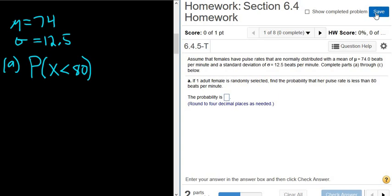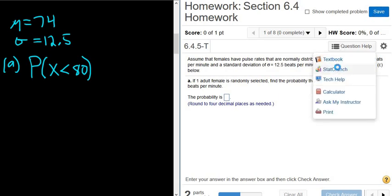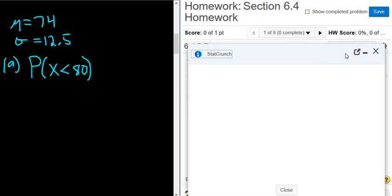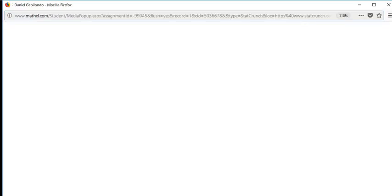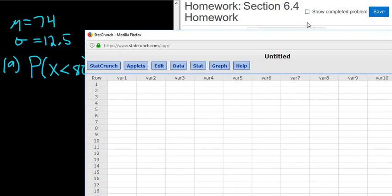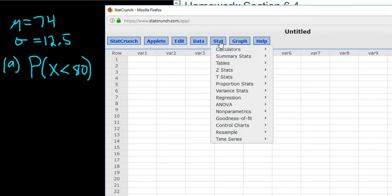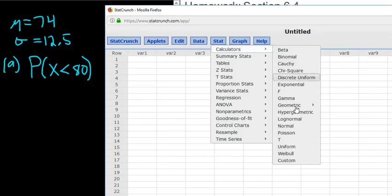Now we'll just go to StatCrunch and get the answer. So you click on Question Help and you go to StatCrunch. I'll detach this so it's easier to see. We go to Stat, Calculators, and then you go to Normal.